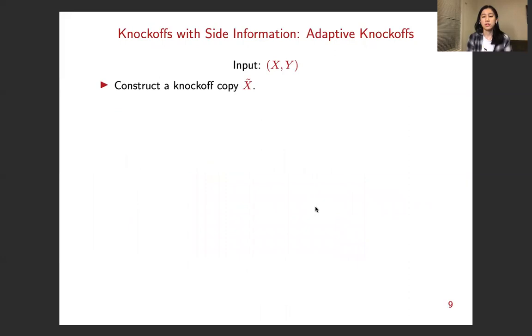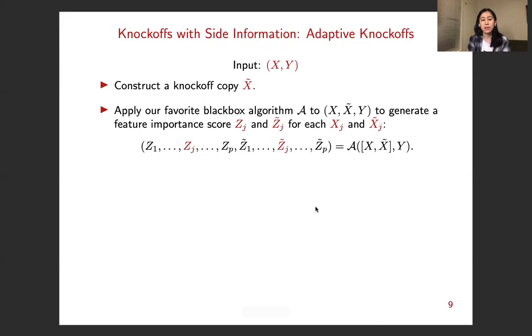So now we are going to describe the procedure. For both the knockoffs procedure and the adaptive knockoffs procedure, the input is the data matrix X and the response vector Y. The first step is to construct the knockoff copy X tilde for the original X. So the construction of knockoffs is already a well-studied problem. Let's just assume it can be done efficiently here. And then we apply our favorite black box algorithm A to the augmented data set X, X tilde, Y to generate the feature importance score zj and zj tilde for each xj and xj tilde.